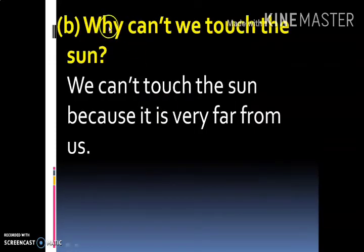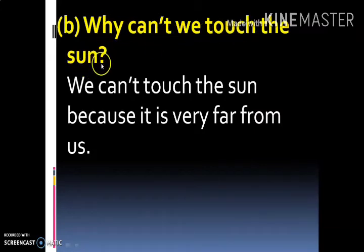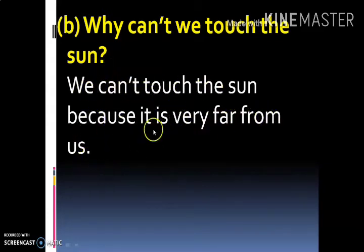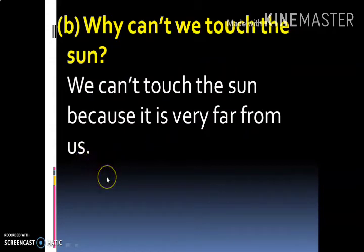चलिए बच्चो topic पे आते हैं — Why can't we touch the sun? जो Ram है वो यह question भी पूछता था। We can't touch the sun because it is very far from us. क्योंकि यह हमसे बहुत ज़्यादा दूर है, पृथ्वी से बहुत दूर है, इसलिए हम उसे छू नहीं सकते।